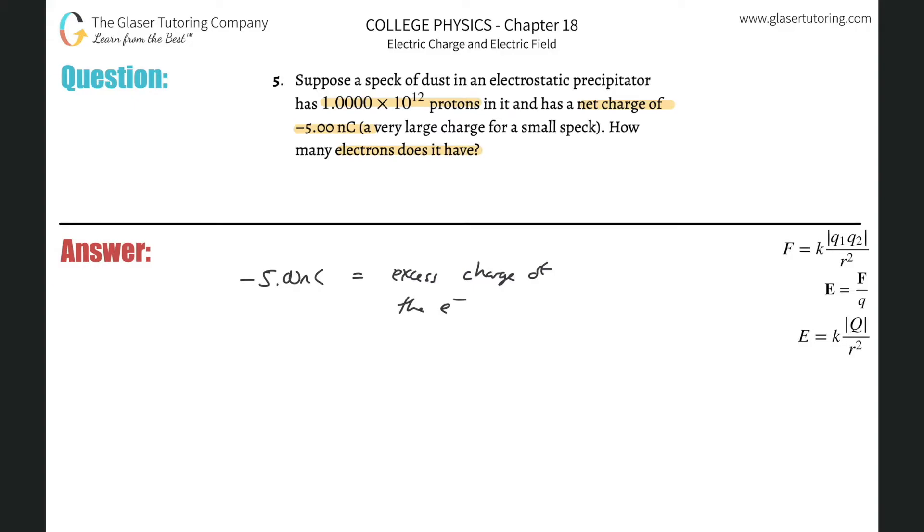You know that if this thing were neutral, the protons would equal the electrons. So basically I know since it's not neutral, that the number of electrons better exceed the number of protons. So what I can do here is I can calculate the number of electrons that are necessary to give this negative 5 nanocoulomb charge. Let's do that.